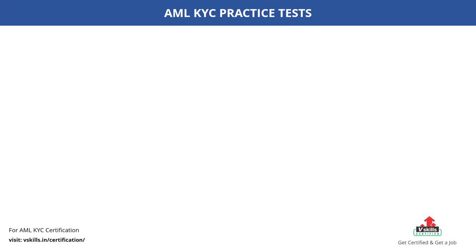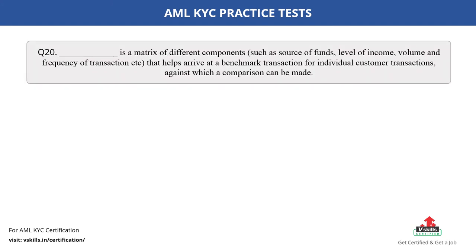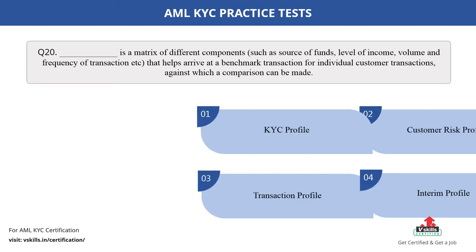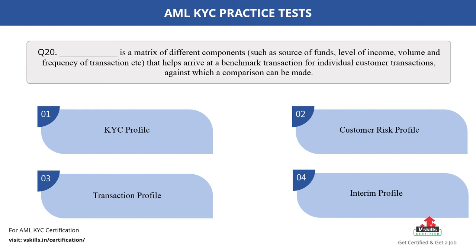Question number 20. Dash is a matrix of different components such as source of funds, level of income, volume and frequency of transaction etc., that helps arrive at a benchmark transaction for individual customer transactions against which a comparison can be made. Fill in the blank. The options are: A. KYC profile; B. Customer risk profile; C. Transaction profile; D. Interim profile. The correct answer is option C.